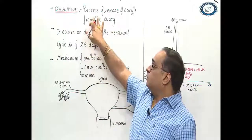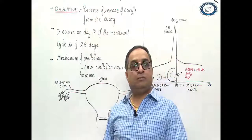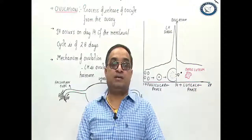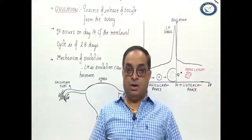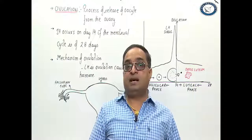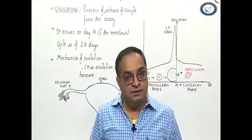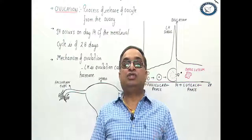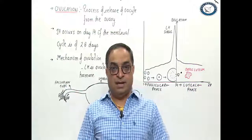Ovulation is the process of release of oocyte from the ovary. Ovaries are the primary sex organs of the female. They are almond-shaped intra-abdominal structures.